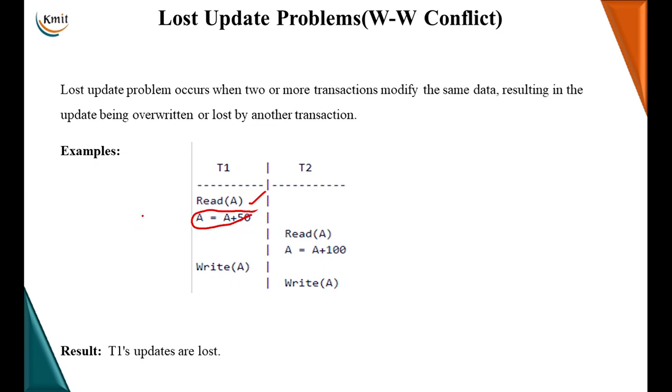Okay. And it is in a process of modifying that data. Say I wanted the value of A was 100 earlier. The transaction T1 has read that value 100 and it is actually modifying. It is adding 50 to that. A value becomes 150 and this is happening in the ALU. The database is not modified yet.